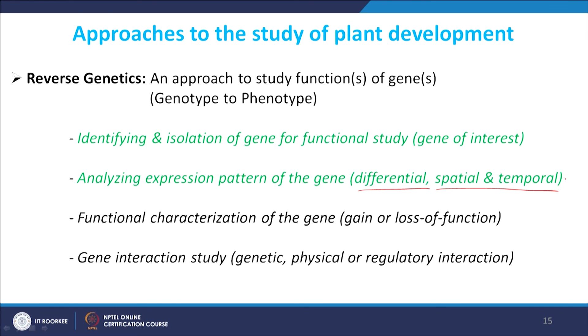To briefly introduce them: one way is to study RNA localization through RNA in-situ hybridization. Then you can do protein localization using specific antibodies. You can also do a kind of promoter trapping using a promoter-less reporter gene — you can do transcriptional fusion or translational fusion. In the next class, we will discuss in detail how to study spatial and temporal expression patterns and functional characterization of genes through reverse genetics based approaches. Thank you very much.